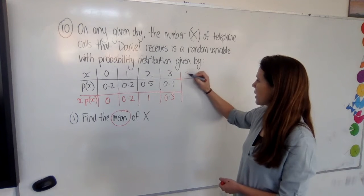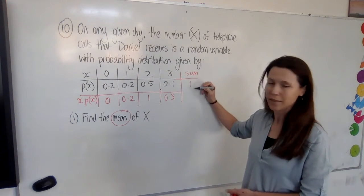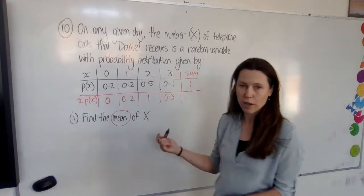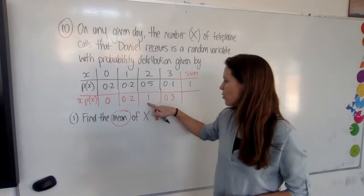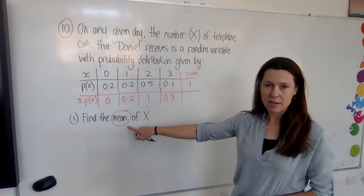And three lots of 0.1 is 0.3. And then we need to add these up. This row can be just added to check that they always equal one, because all probabilities in all the options should add up to one. But when we add these four numbers together, this gives us the expected value, which is the mean.